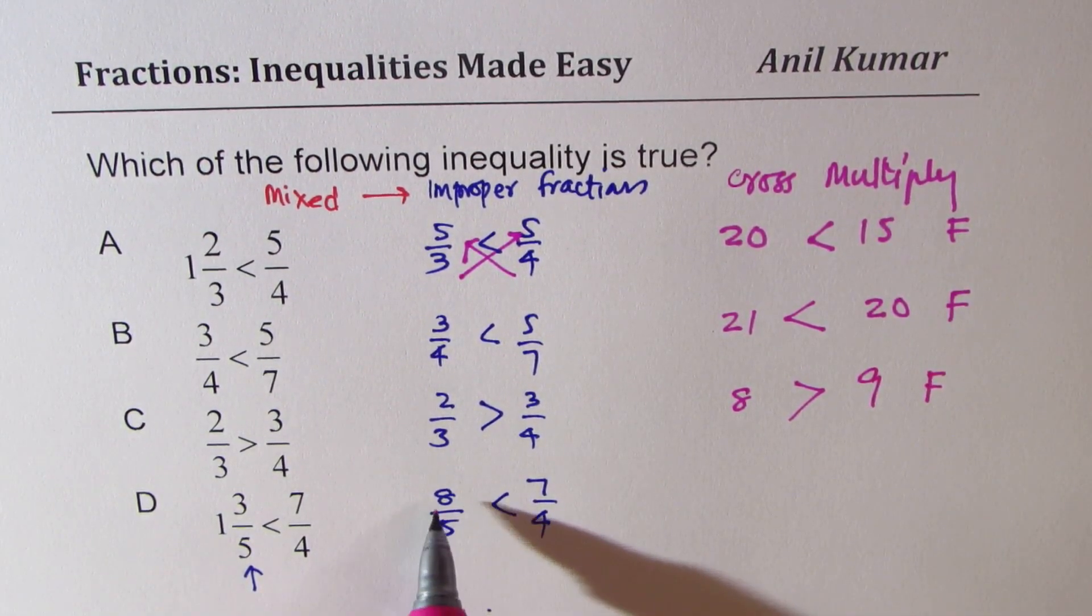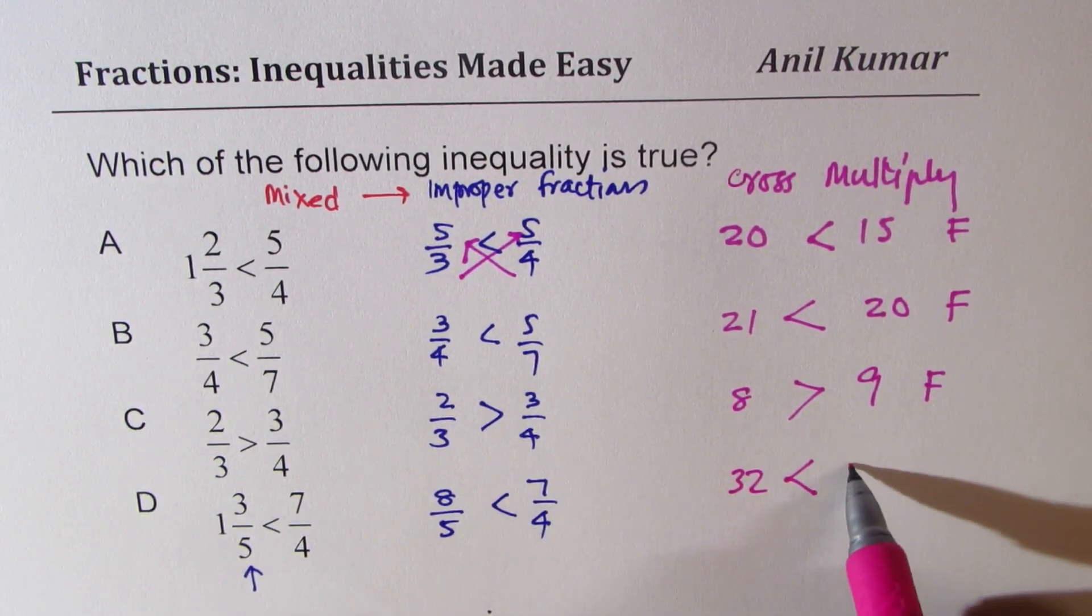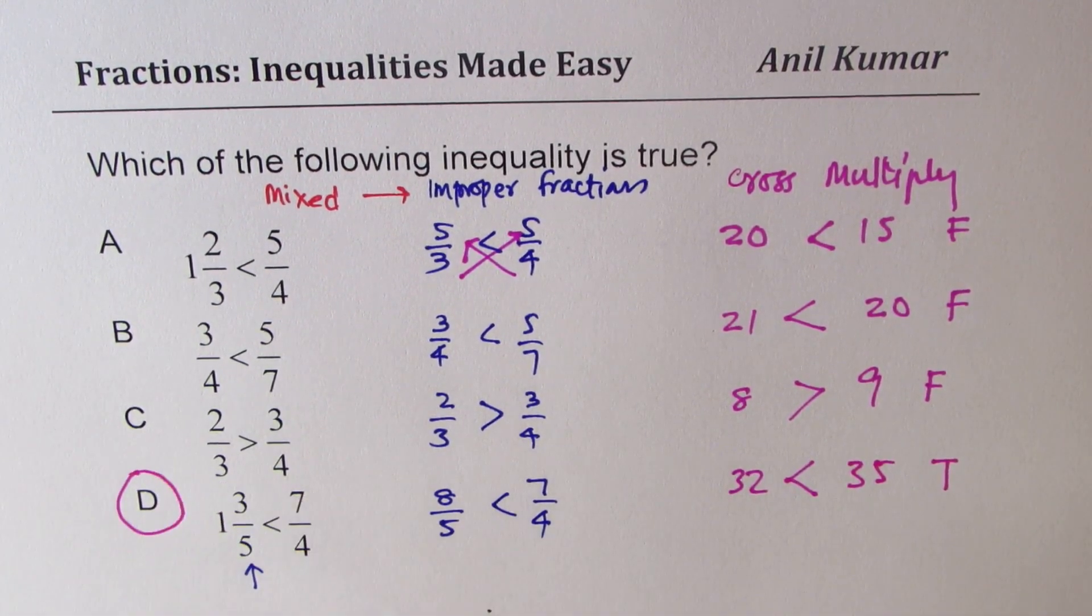If you multiply 4 and 8, you get 32. The sign is like this. 5 times 7 is 35 and that is true. So option D is the right option.